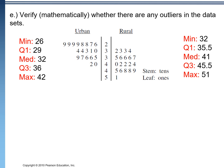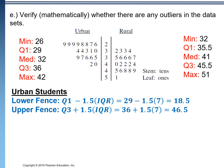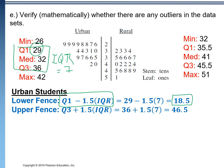So in part E, we're asked to verify whether or not there are any outliers in the data. For urban students, we want to find the lower fence and the upper fence. The lower fence is found by Q1 minus 1.5 times the IQR. The IQR is Q3 minus Q1, so the IQR here is 7. So Q1 of 29 minus 1.5 times the IQR gives us a lower fence of 18.5. Anything less than 18.5 would be an outlier; our minimum is 26, so there are no low outliers. The upper fence uses Q3 plus 1.5 times the IQR, giving an upper fence of 46.5. Anything above that would be an outlier; our maximum is 42, so there are no high outliers.